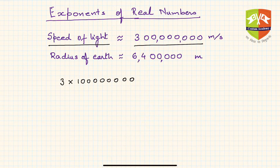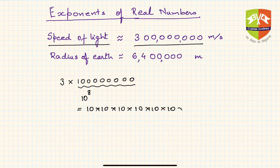Three times one followed by eight zeros. Now this particular value, one followed by eight zeros, can be shorthand written as 10 to the power of eight - which is nothing but 10 multiplied by 10 eight times.